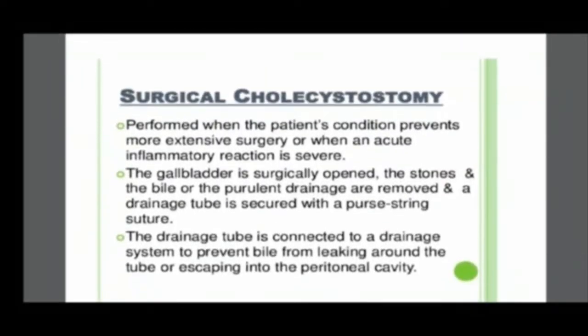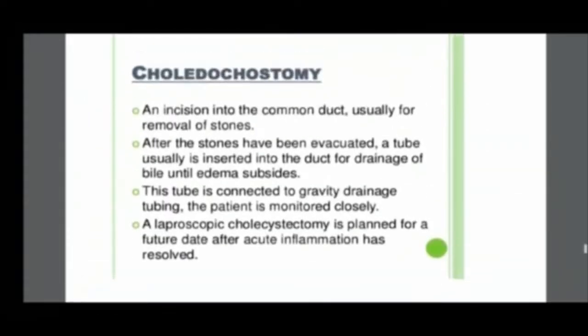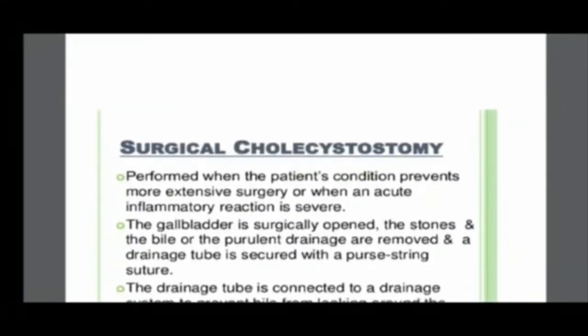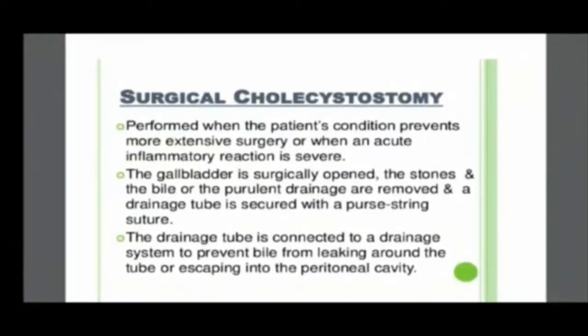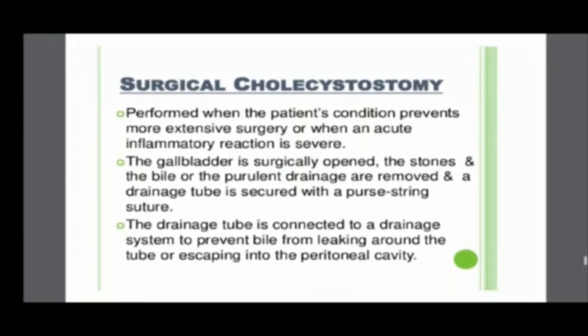Cholecystostomy is performed when the patient's condition prevents more extensive surgery or when the acute inflammatory reaction is very severe. Here the gallbladder is not removed — instead, an opening is made into the gallbladder, stones and bile or purulent material are removed, and a drainage tube is secured with a purse-string suture. The drainage tube is connected to a drainage system to prevent bile from leaking into the peritoneal cavity.